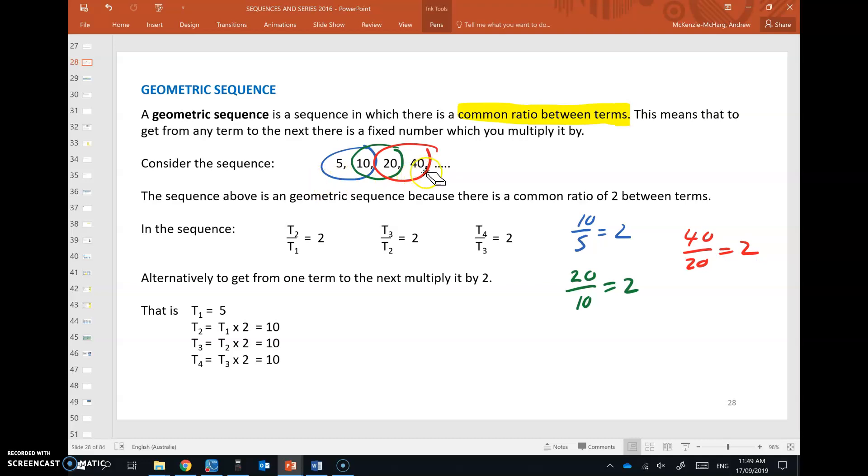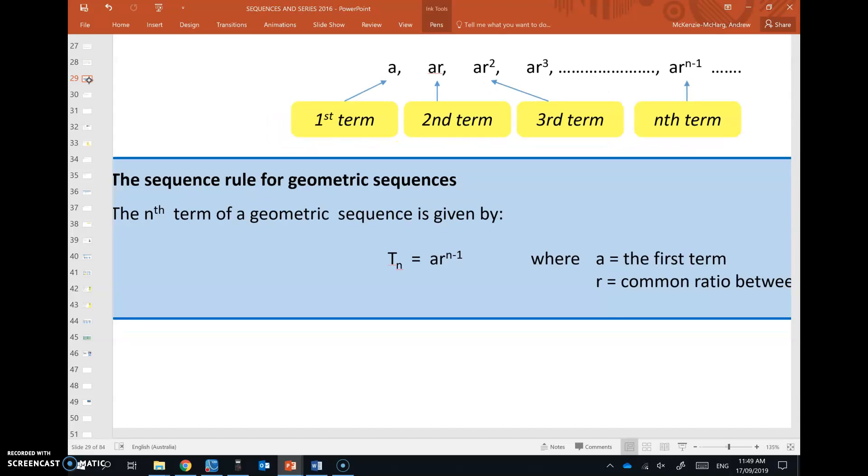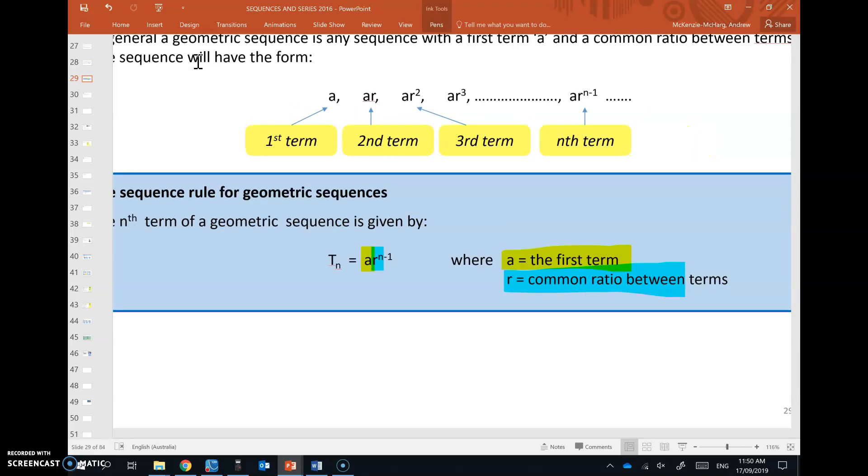So clearly what's happening in this sequence to get from one term to the next is they're doubling or multiplying by 2 each time. So that's the common ratio for this sequence. So the general form of a geometric sequence is given by t_n equals a r to the n minus 1. So a is still the first term just like with an arithmetic sequence and that r value is the common ratio between terms.